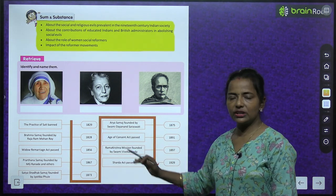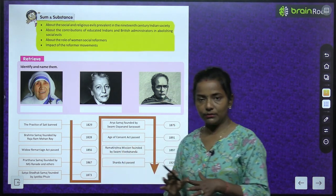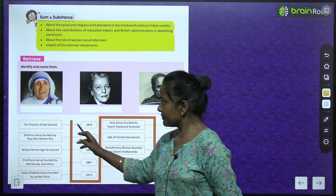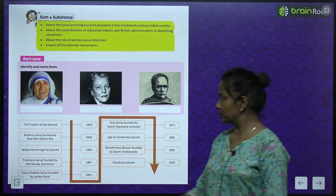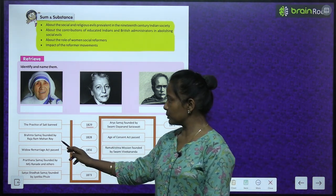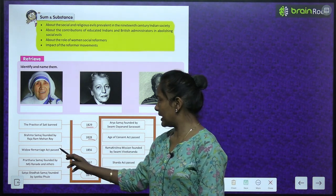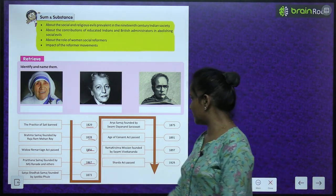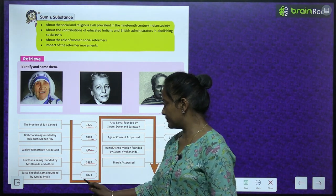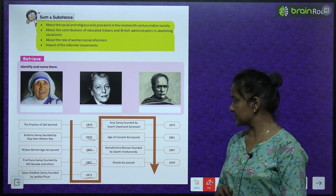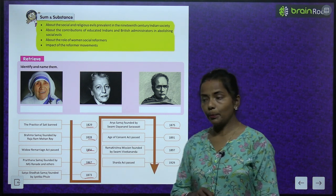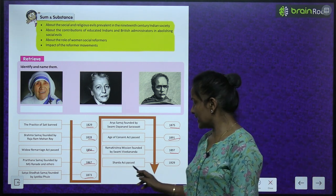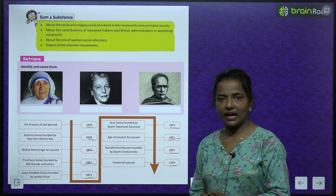Here are some key years and events: The practice of sati was banned in 1829. Brahmo Samaj was founded by Raja Ram Mohan Roy in 1828. Widow Remarriage Act was passed in 1856. Prarthna Samaj was founded by M.G. Ranade and others in 1867. Satya Shodak Samaj was founded by Jyotiba Phule in 1873. Arya Samaj was founded by Swami Dayanand Saraswati in 1875. Age of Consent Act was passed in 1891. Ramakrishna Mission was founded by Swami Vivekananda in 1897. And the Sharda Act was passed in 1929.